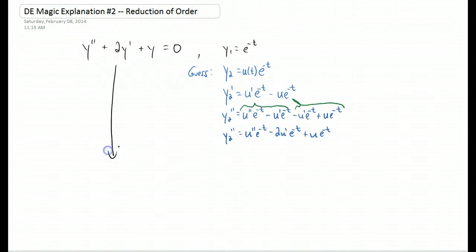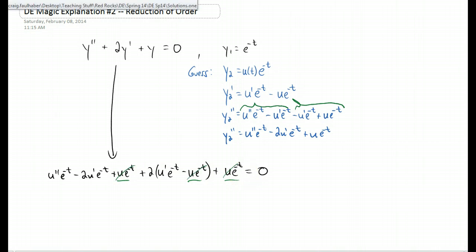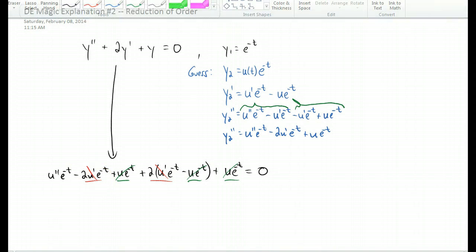Again, we're going to start plugging our guess into the differential equation. And something cool is going to happen every time you do this. You'll notice the u terms actually are going to cancel each other out. In this particular example, you have a couple more terms canceling. You have u prime terms canceling as well. And what you're left with is pretty simple.